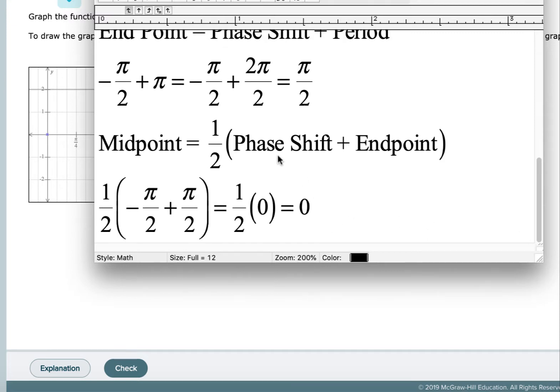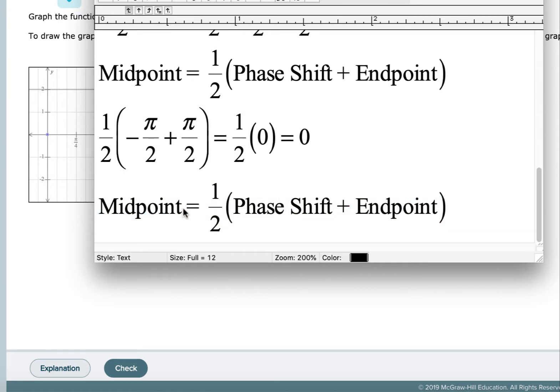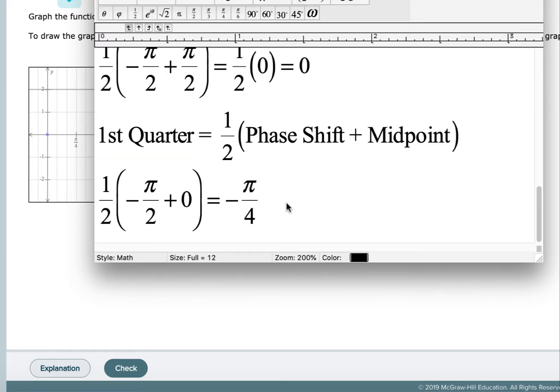Now let's find the quarter points. So to find the quarter points, we're going to do the same formula. We're going to find the midpoint, but now we're going to find the midpoint of the phase shift and the midpoint. So to find the first quarter point, we're going to take one half of the phase shift. But now instead of doing the endpoint, we're going to do the midpoint. And so that's going to give us one half negative π over 2 and the midpoint, which was zero. And then the third quarter point—the second quarter point, by the way, is the midpoint.